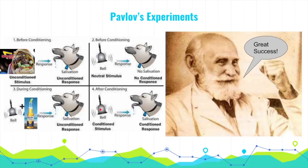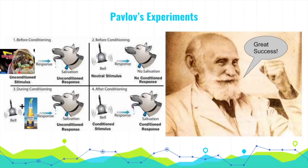Looking at the chart: first Pavlov observes food causing salivation, then he trains the dogs to associate the bell with food arriving, and eventually the bell alone causes salivation. The bell is a neutral stimulus — one that normally elicits no response. The dog's salivation to food is an unconditioned response — a naturally occurring response. The food is the unconditioned stimulus. The salivation to the bell is a conditioned response, and the bell itself becomes the conditioned stimulus.